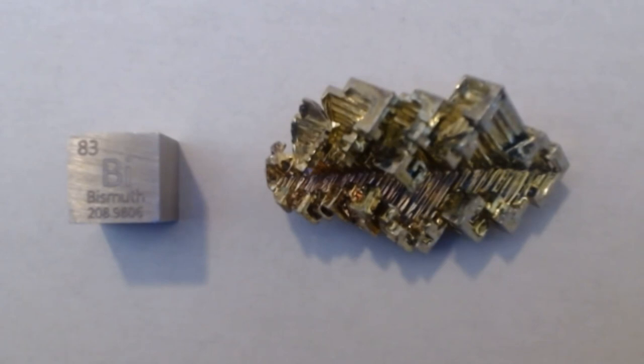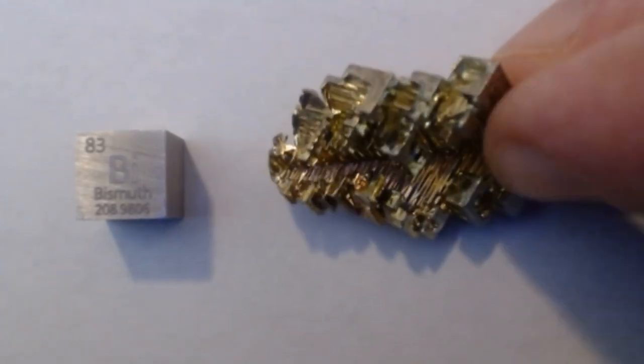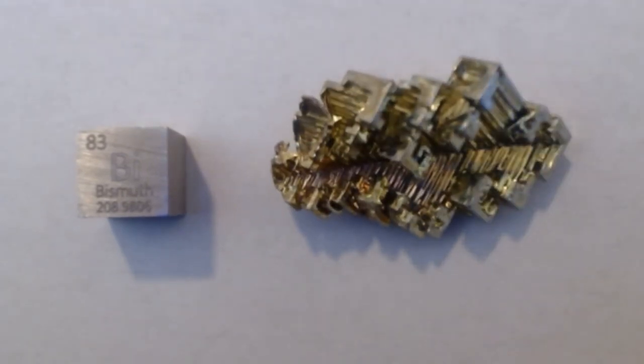It normally comes in a brittle, crystalline, white metal form. It also has kind of like a silvery color to it, not unlike a lot of the other metals that you're going to find. One of the more interesting forms is this crystal form, which is naturally occurring.